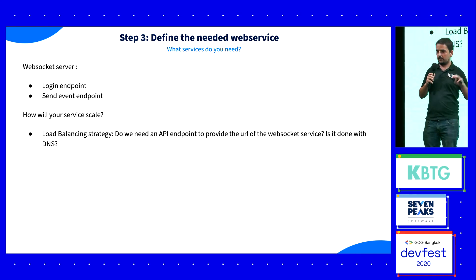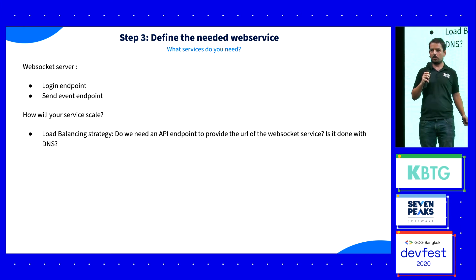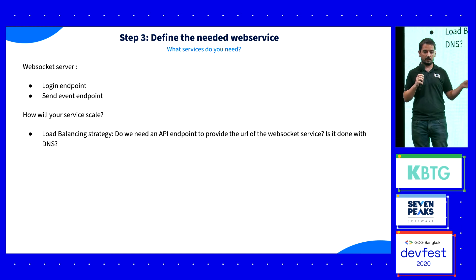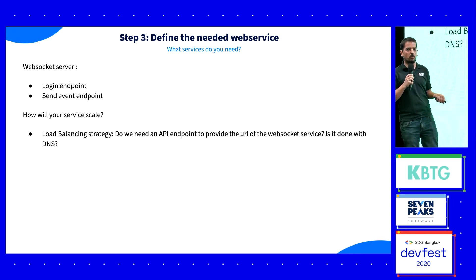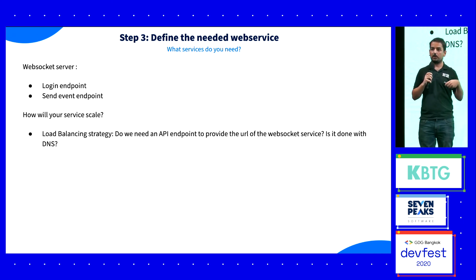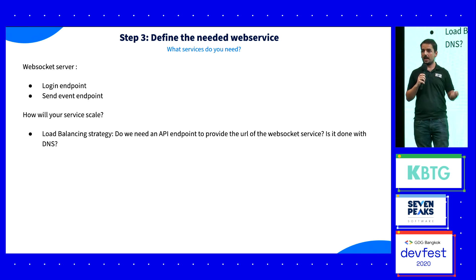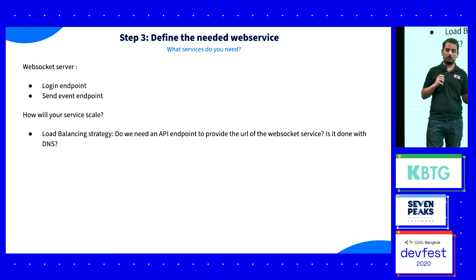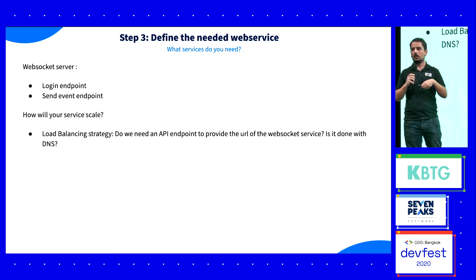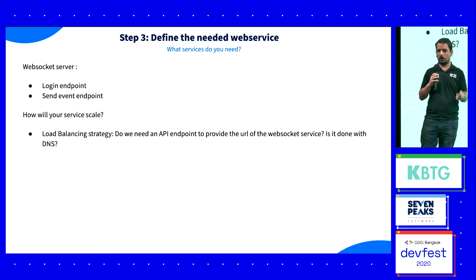Now we need to define the needed web services. System design is a teamwork effort — you will need WebSocket endpoints for login and for sending events. As a mobile developer you might think that's all, but from a backend perspective there are other issues. For example, with millions or billions of users, you may need to think about load balancing. Do you need an API to provide the WebSocket URL for load balancing, or can it be handled by DNS? At minimum, you need to work with other teams to know what will be done and how.